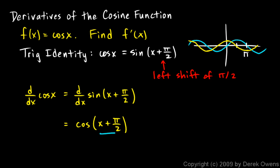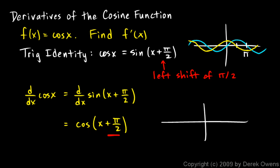So the derivative of cosine x is the cosine of x plus pi over 2. Now think about this: the x plus pi over 2 is again a left shift of pi over 2. So what happens if we take the cosine function and shift it left pi over 2? Well, again, that's pretty easy to see on the graph.